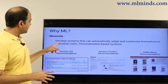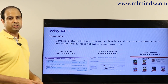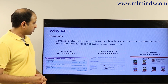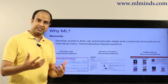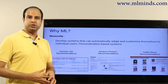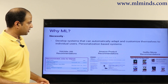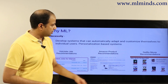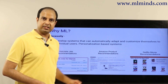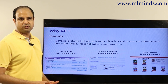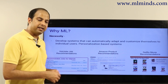Machine learning is also necessary for developing systems that can automatically adapt and customize themselves to individual users. Such systems are called personalization-based systems and include personalized search, personalized recommendation systems, and personalized ads. These are recommendations on job portals, on Amazon, on Netflix for movies — jobs, products, and movies recommended in a personalized way based on your history or based on what similar users have bought.